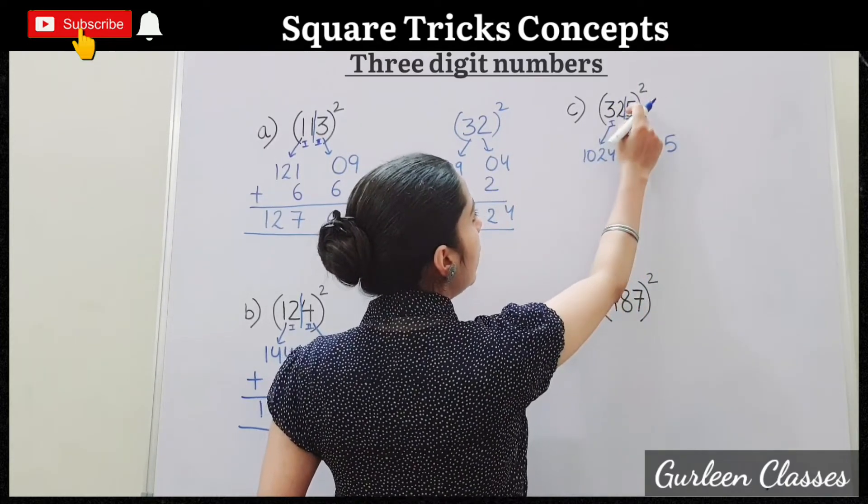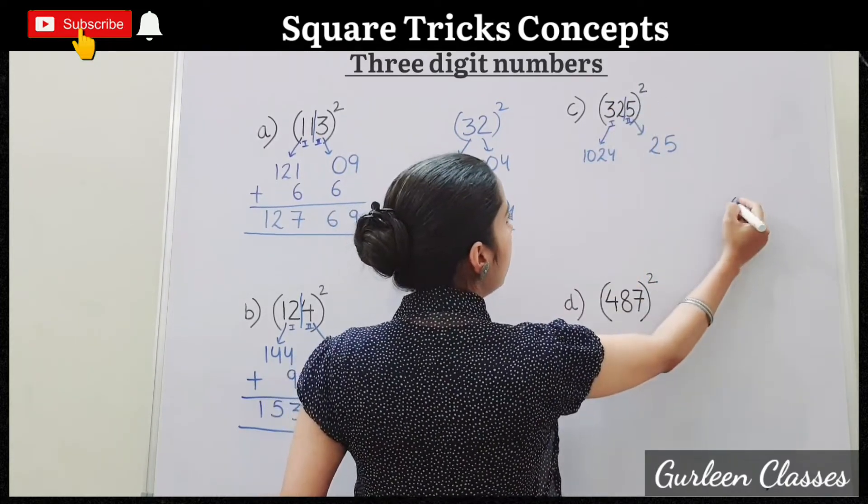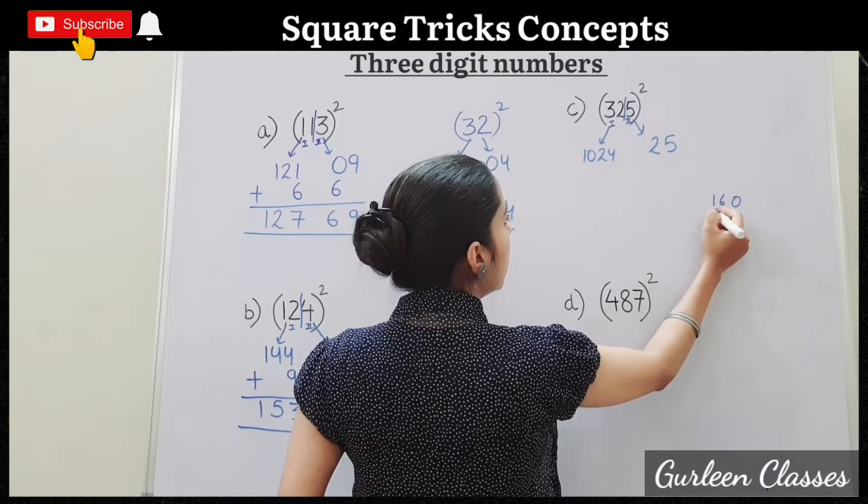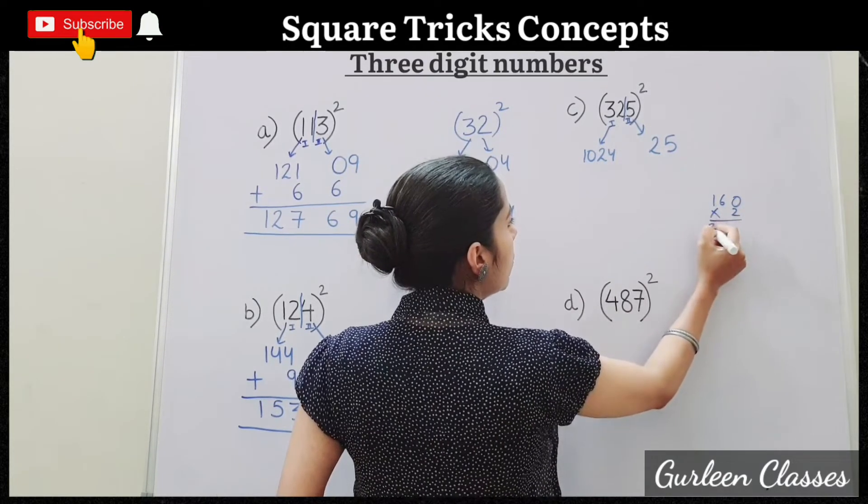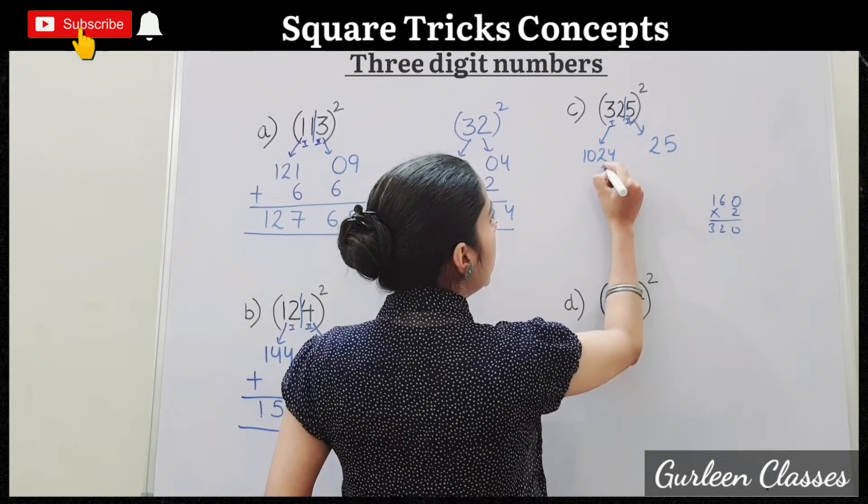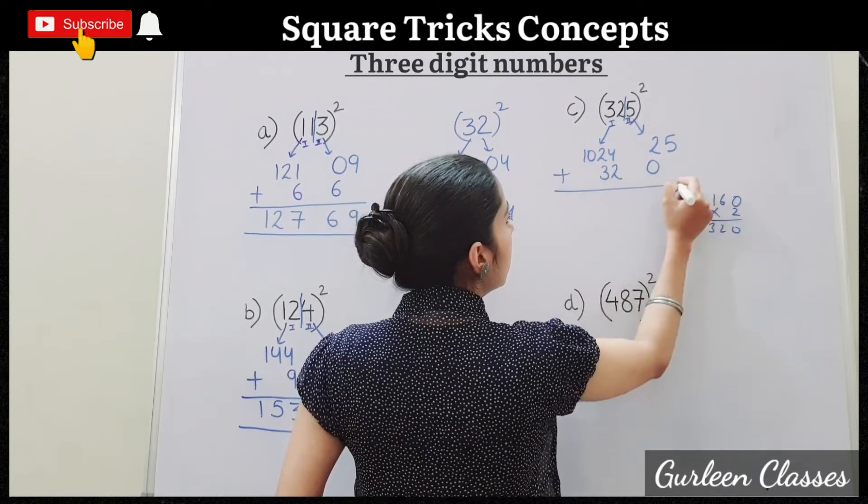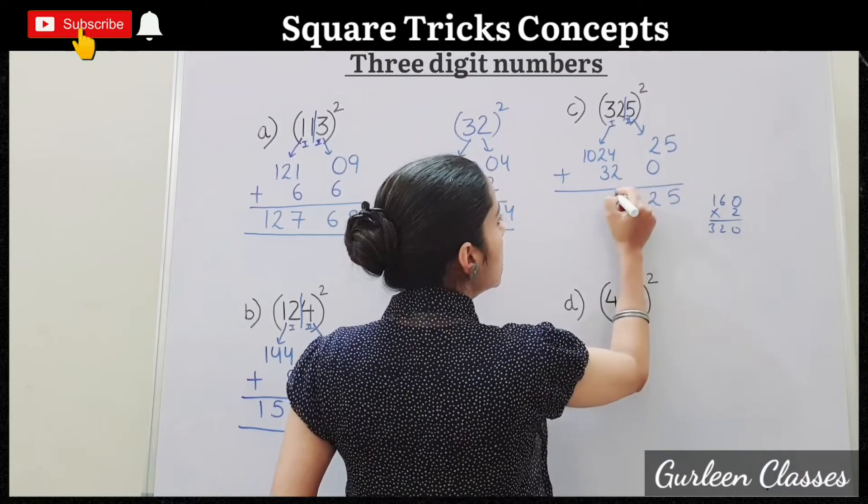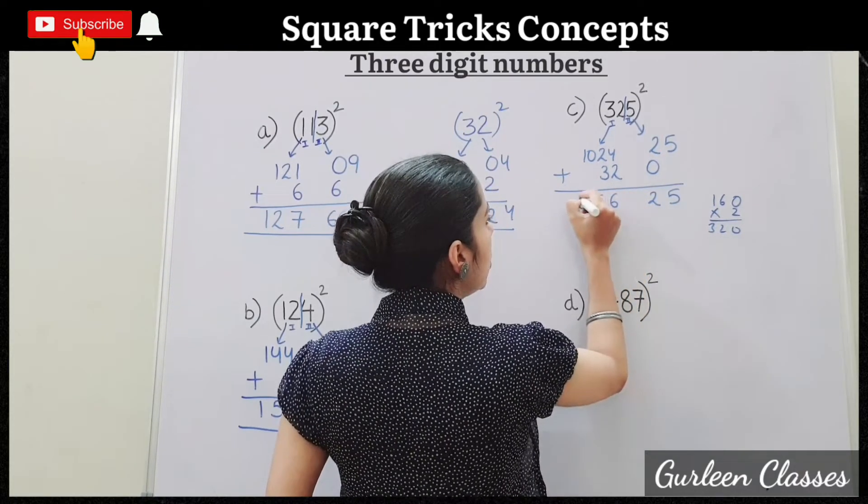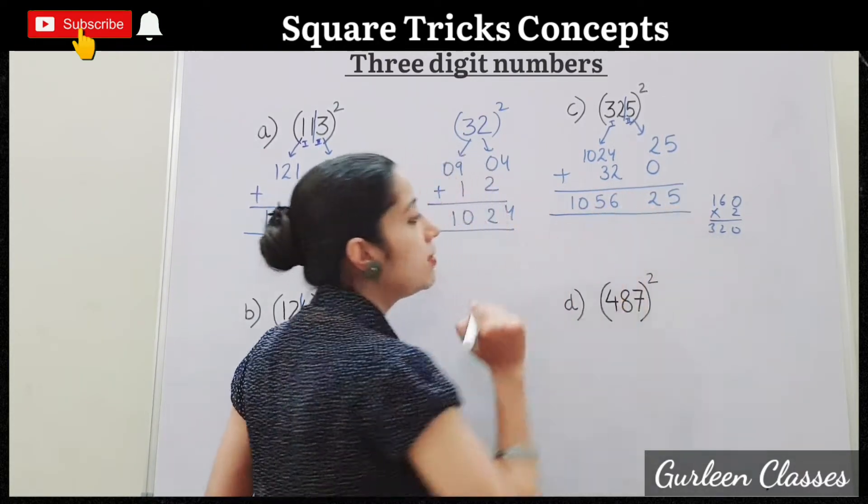Now multiply 32 into 5. 5 twos are 10. 5 threes are 15 and 16, into 2, that is 320. So write here 3, 2, 0. We will add 5, 2, 6, 3, 4, 5, 0, 1. 105,625.